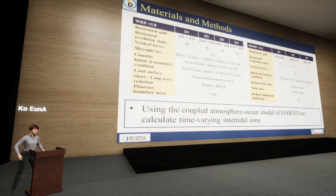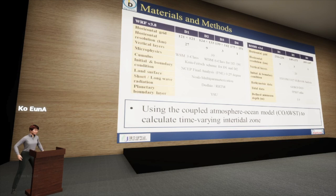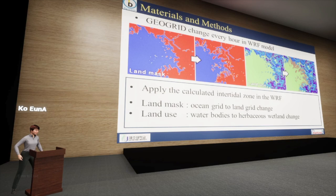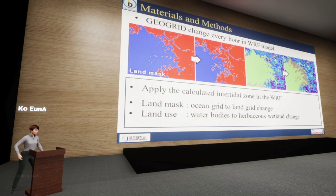The CROP system was used to calculate the hourly spatial changes in the model grid corresponding to the area of the intertidal zone. To obtain a more accurate intertidal area for assessing meteorological impact, the intertidal zone from the coupled model was adjusted using multi-spectral imagery from the Landsat-8 satellite. When applying the final calculated intertidal area to the geogrid in the WRF model, the land mask on the grid corresponding to the intertidal zone was modified from ocean to land, and the land use was changed from water body to herbaceous land. Using the modified geogrid, the WRF model was conducted continuously at one-hour intervals.